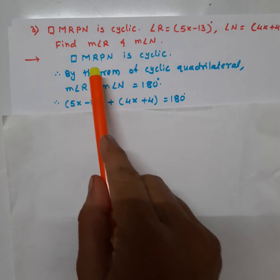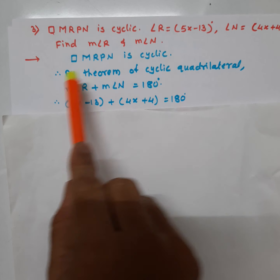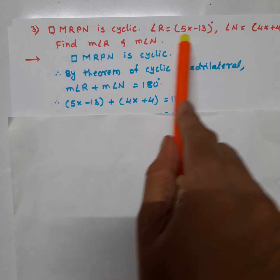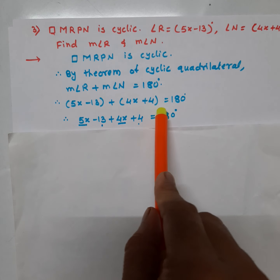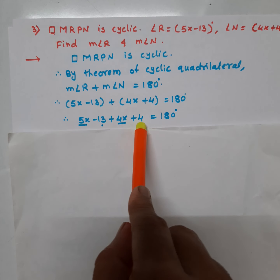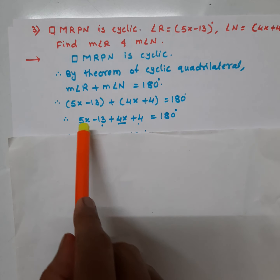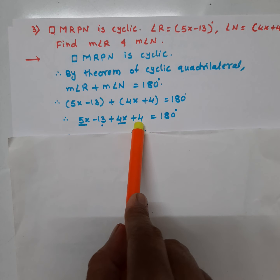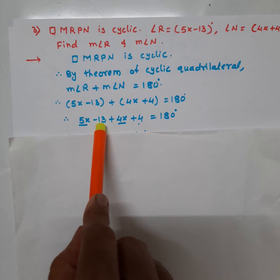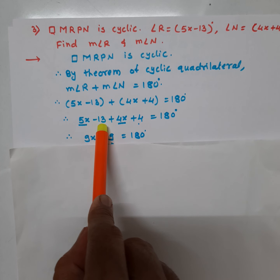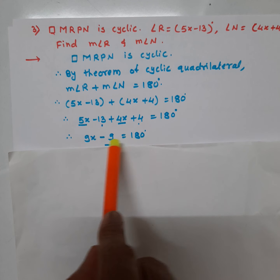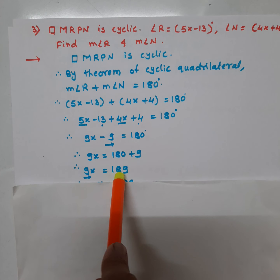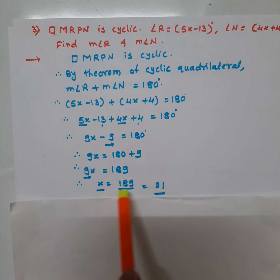Quadrilateral MRPN is cyclic, therefore by the theorem of cyclic quadrilateral, angle R plus angle N equals 180 degrees. Substituting: 5x minus 13 plus 4x plus 4 equals 180 degrees. Combining like terms: 9x minus 9 equals 180. Transferring 9 to the right side gives 9x equals 189. Therefore x equals 21.